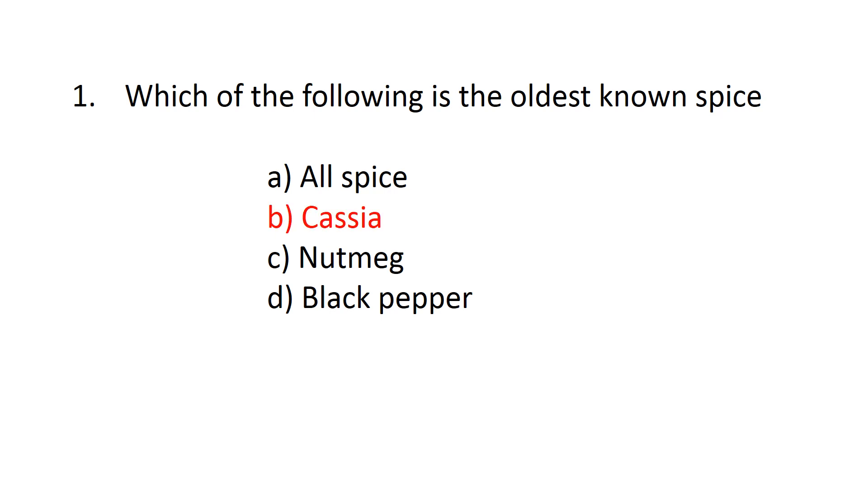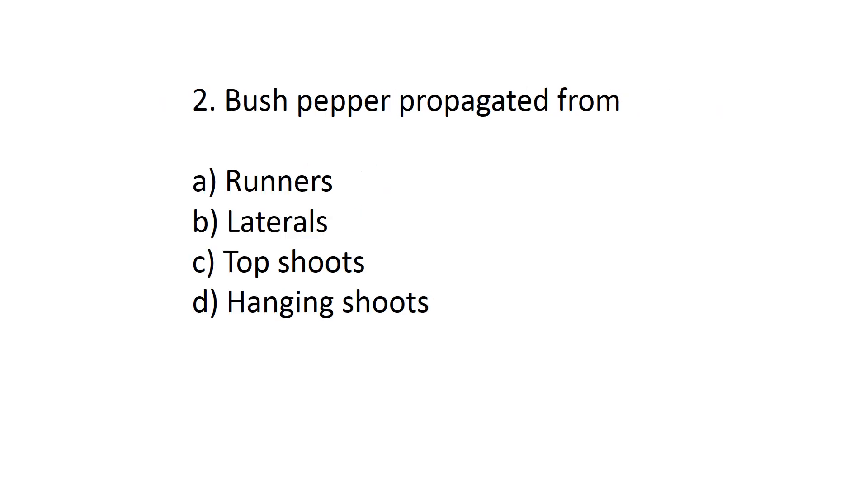Answer is option B, cassia. Bush pepper propagated from option A: runners, B: laterals, C: top shoots, and D: hanging shoots.